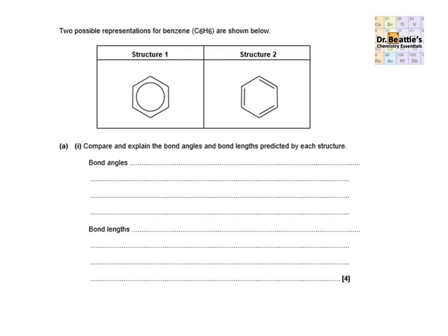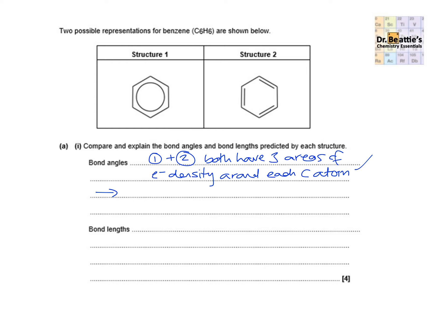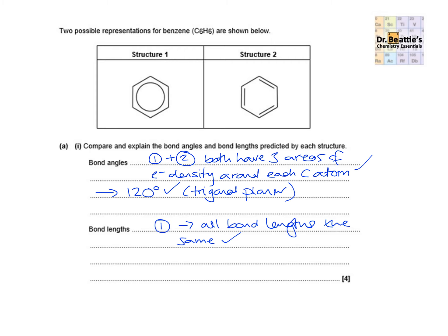Here's another exam question — pause the video and have a go at this 4-marker. Structure 1 is the delocalized structure, structure 2 is Kekulé. We've been asked to compare and explain bond angles and bond lengths. In both structures, there are three areas of electron density around each carbon atom of the ring, leading to a bond angle of 120 degrees — trigonal planar geometry. For bond lengths: in structure 1 all bond lengths are the same, whereas in structure 2 the C=C bond lengths are shorter than the C-C single bond lengths.